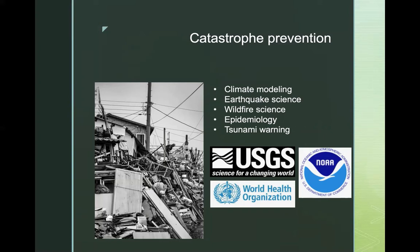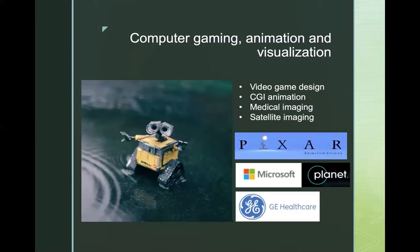Federal and international organizations such as the US Geological Survey, the National Oceanic and Atmospheric Administration, or the World Health Organization hire applied mathematicians. Another large class of employers for applied mathematicians can be found in the computer gaming, animation, and visualization industry, including video game design companies such as Microsoft and Tencent, CGI animation companies such as Pixar, medical imaging companies such as General Electric's Healthcare, and satellite imaging companies such as Planet.